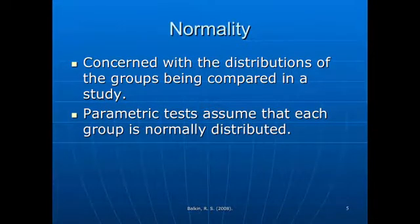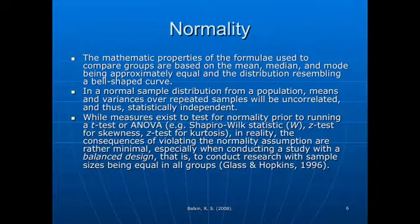Normality is concerned with the distribution of the groups being compared in the study. ANOVA assumes that each group is normally distributed. There are various formulas used to compute normality, and while measures exist for testing normality, the consequences of violating the normality assumption are actually minimal. This is especially true if your design is balanced — meaning equal sample sizes in all your groups. If you have a balanced design, you really don't have to worry about normality.